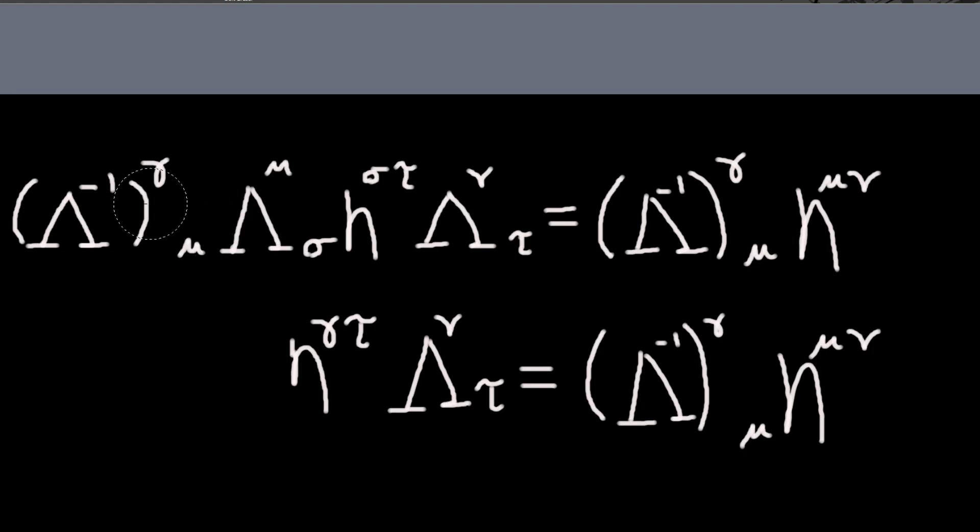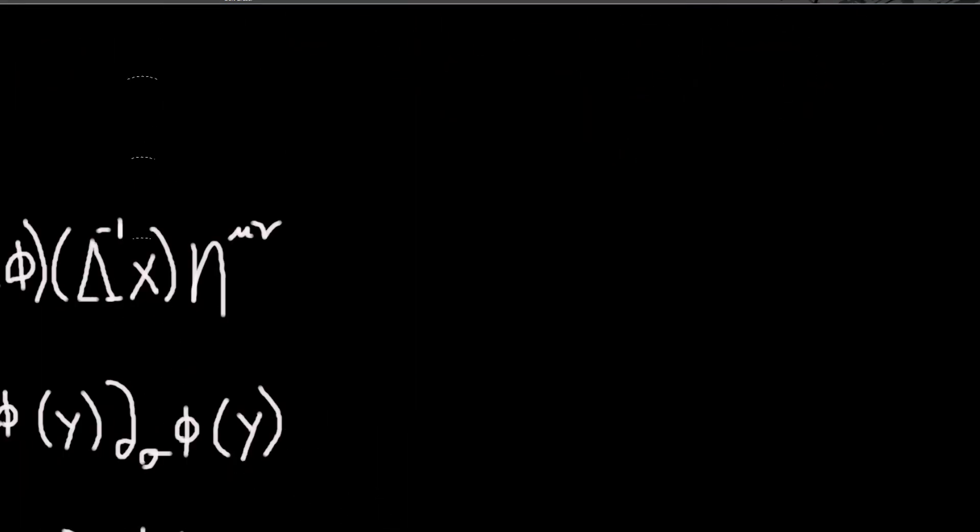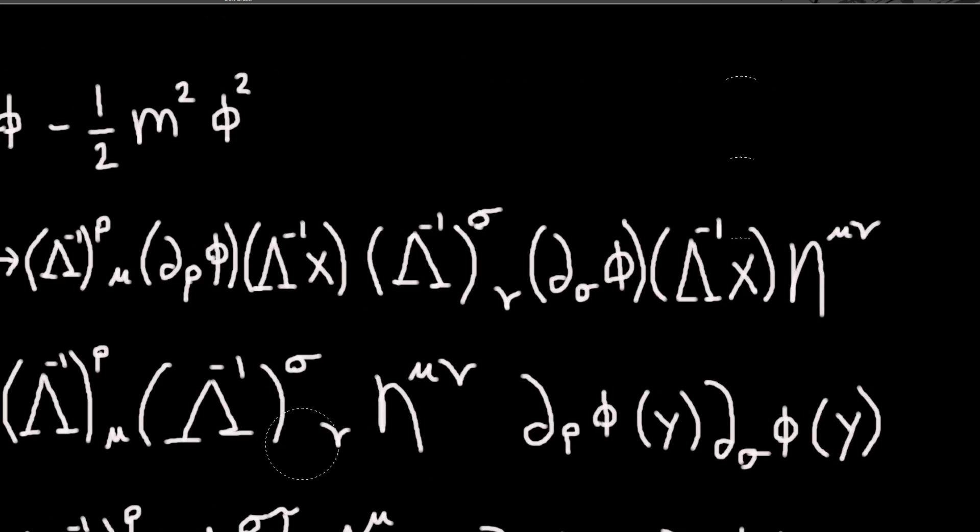So this becomes Kronecker delta gamma sigma, and then I can use that delta gamma sigma on this sigma here. So I will just have eta gamma tau, and this is still that, and the right side is still the right side. So but this is the important point, this relation. So I have kind of an inverse times an eta is equal to a non-inverse thing times an eta, and that's what I'll use here.